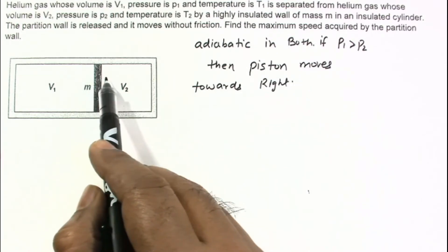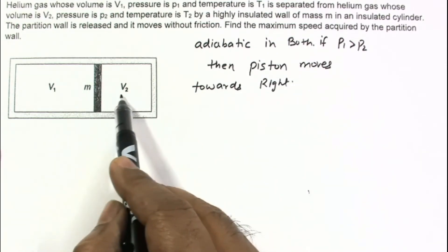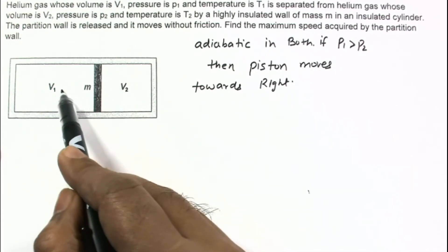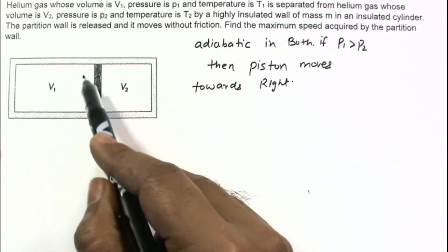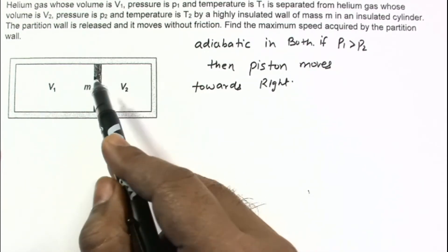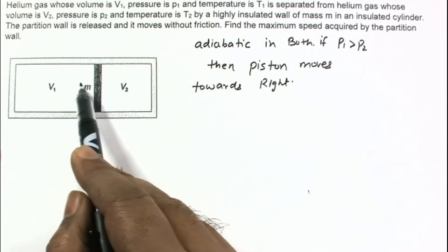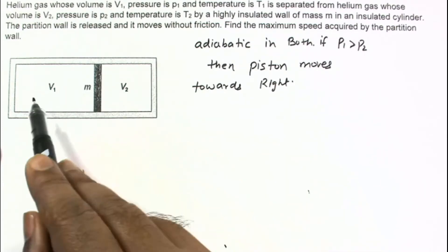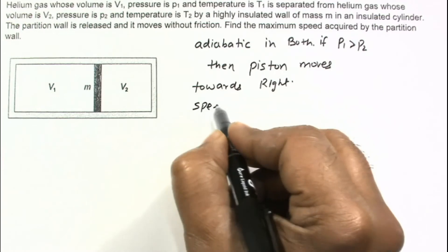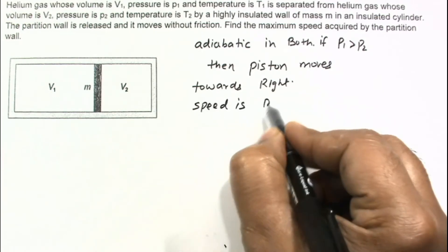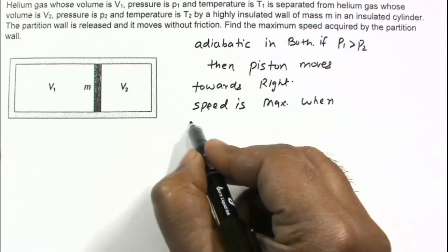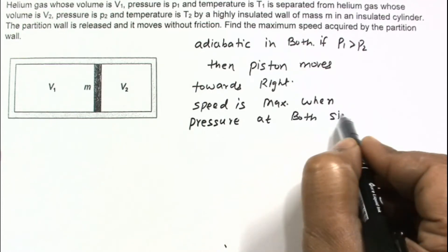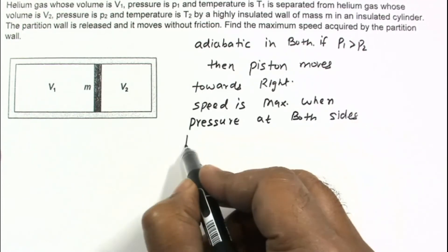If the piston is moving towards the right, the volume on the left is decreasing and its pressure is increasing, while the pressure on the right is decreasing. A time will come when the pressures on both sides become equal. Until that point, the piston accelerates, so the speed is maximum when the pressures on both sides become equal.